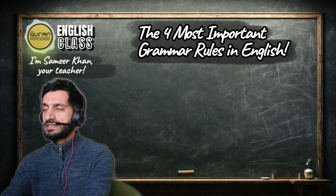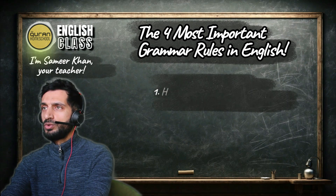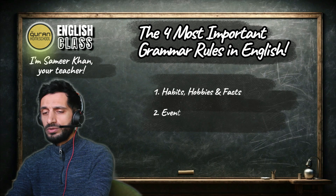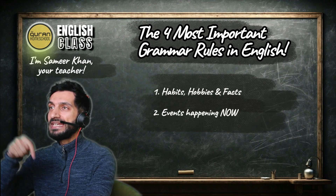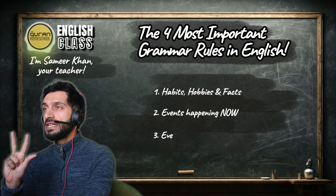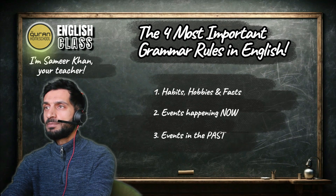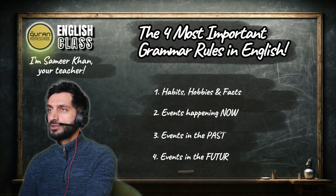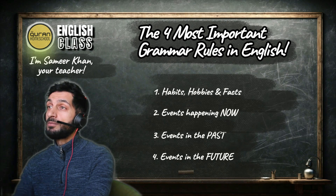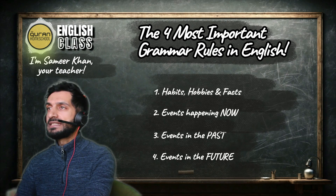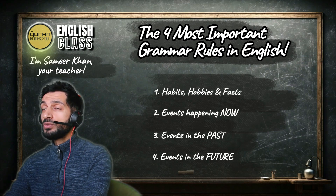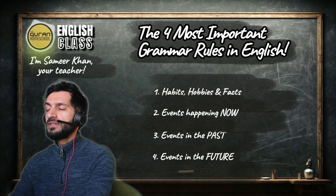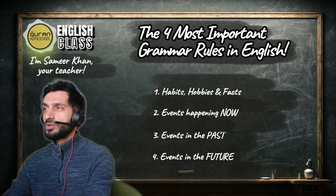Number one: how to talk about habits and hobbies. Number two: talking about events happening now. Number three: events in the past. Number four: events in the future.